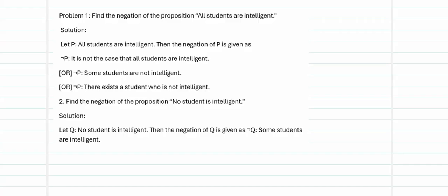Find the negation of 'All students are intelligent.' You can rewrite this as: 'It is not the case that all students are intelligent,' or 'Some students are not intelligent,' or 'There exists a student who is not intelligent.' Simply saying 'Not all students are intelligent' is acceptable, meaning only some are not intelligent. For 'No student is intelligent,' the negation is 'Some students are intelligent.'